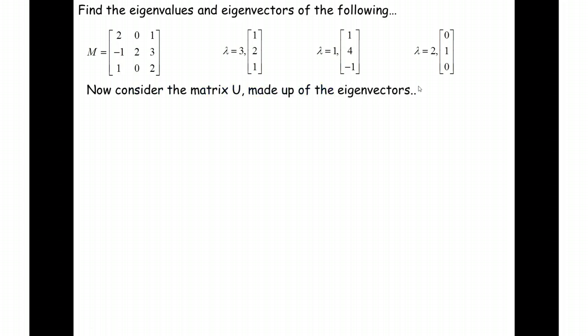So what we're going to do is we're going to consider the matrix that we're going to call U that's going to be made of the eigenvectors. So each of these eigenvectors are going to form a matrix that we're going to call U. And there you go.